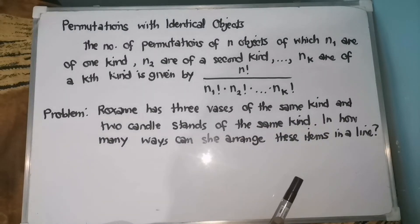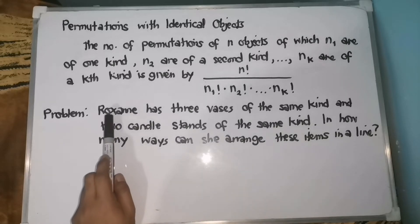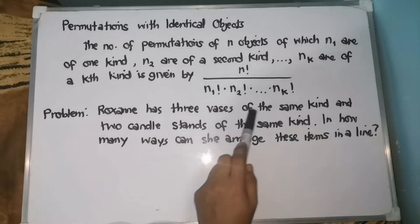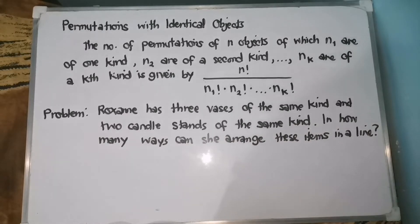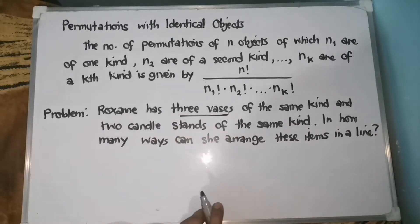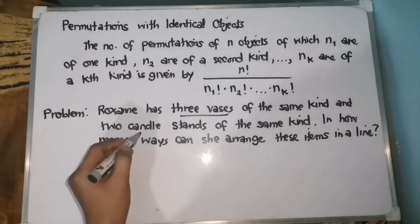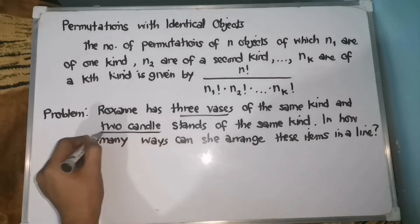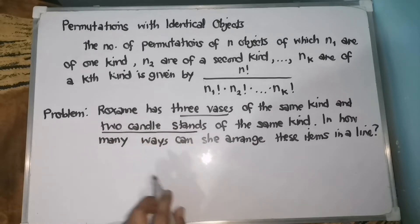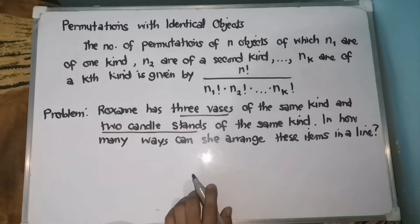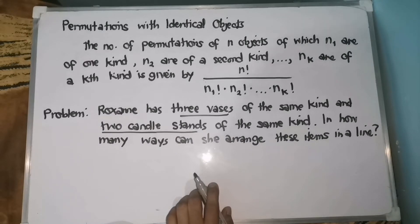For you to be able to understand it better, let's have a problem. Roxanne has 3 bases of the same kind — again, let's take note of our given: 3 bases of the same kind — and 2 candle stands of the same kind. In how many ways can she arrange these items in a line? So, tinatanong kung ilang ways daw ito i-arrange in a line.